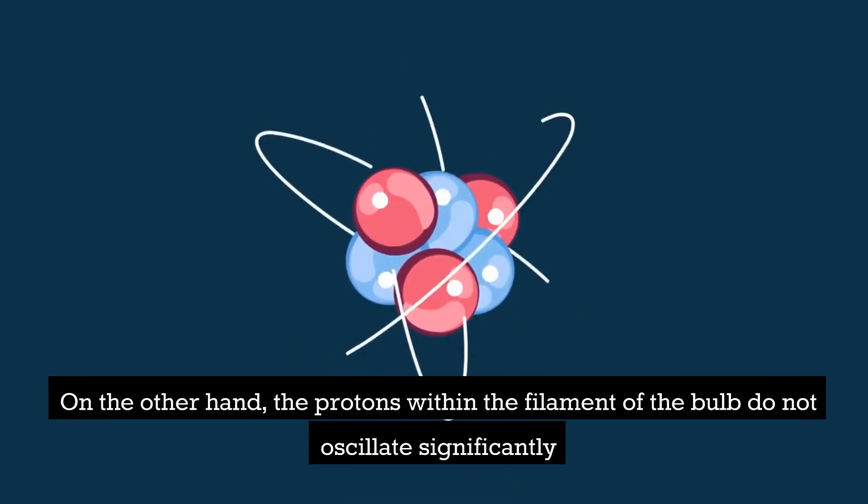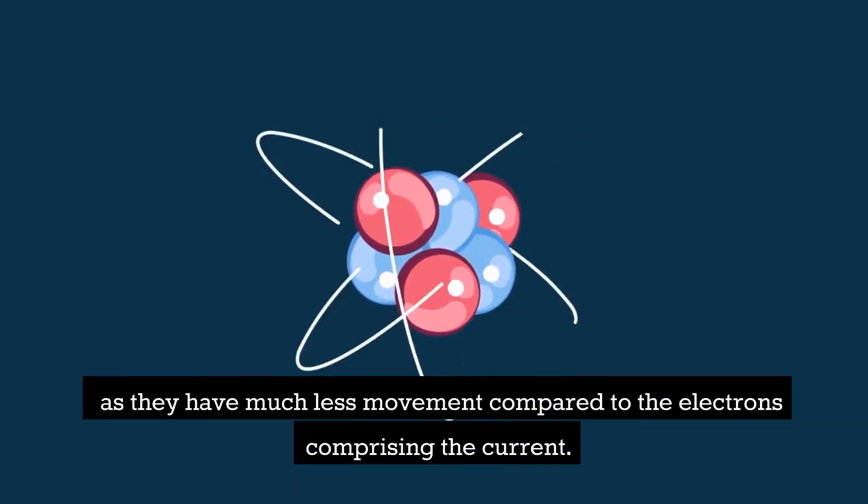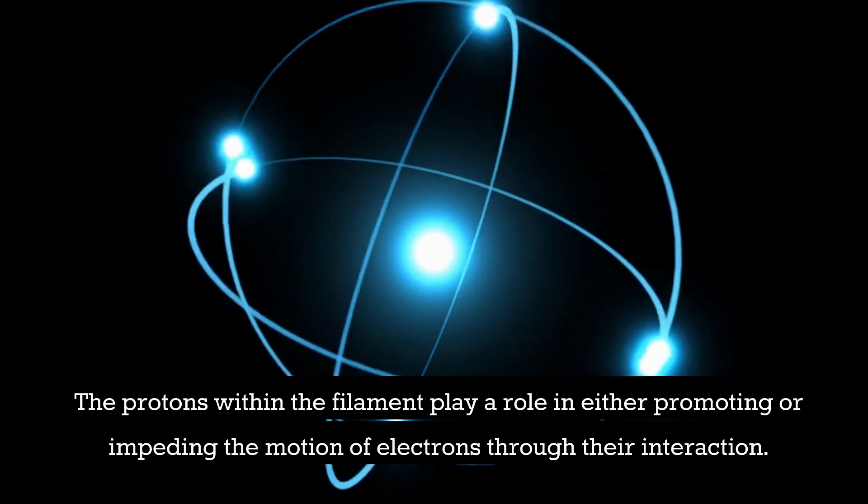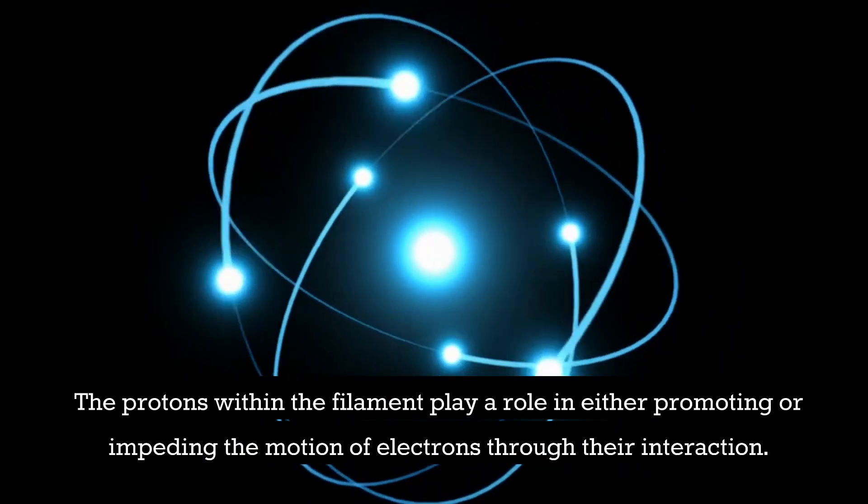On the other hand, the protons within the filament of the bulb do not oscillate significantly as they have much less movement compared to the electrons comprising the current. The protons within the filament play a role in either promoting or impeding the motion of electrons through their interaction.